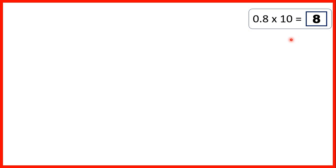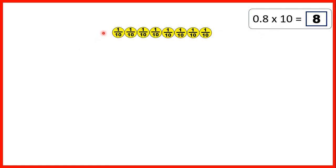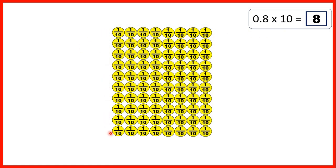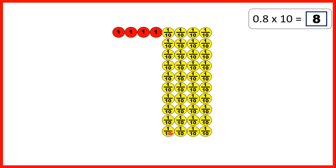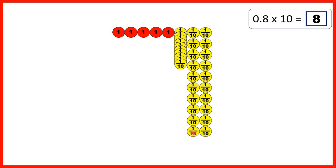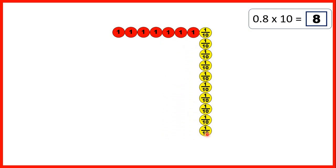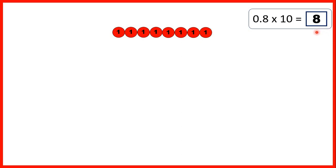We could also use place value counters. 0.8 is 8 tenths, and if we're multiplying by 10, we can have 10 rows of 8 tenths. But remember, when you've got 10 of something, you can exchange it for one place value counter to the left. So we have 80 tenths, but we can join these into 8 ones, giving us 8 as our answer.